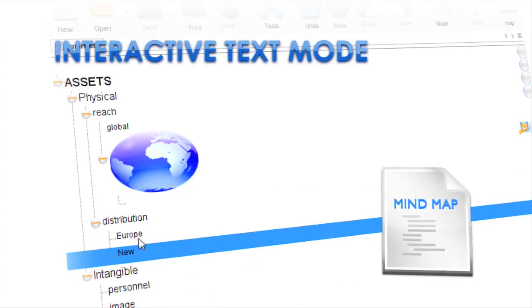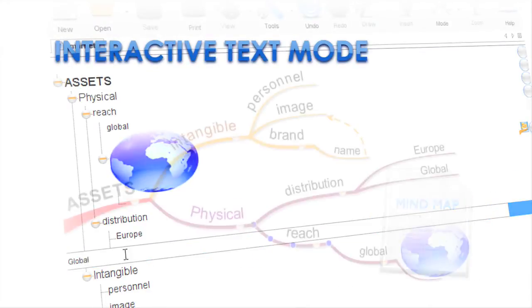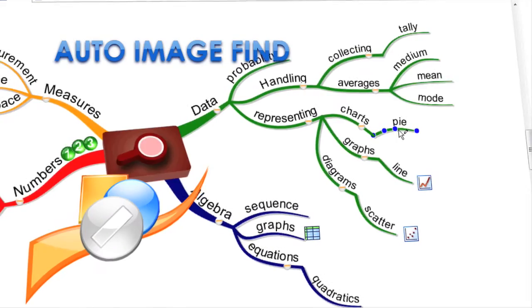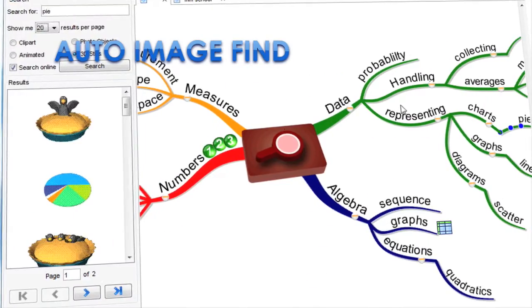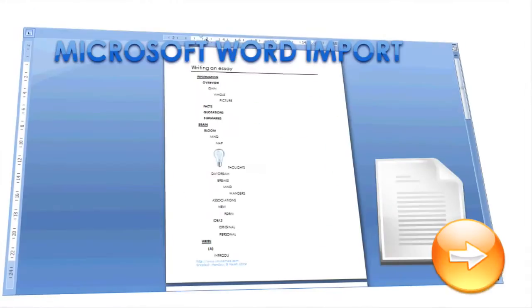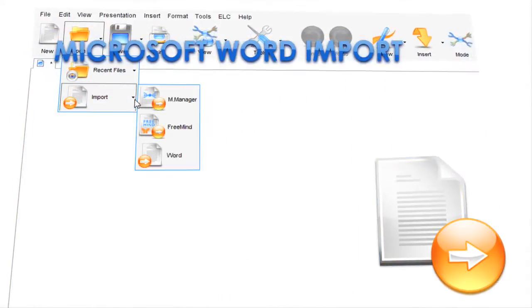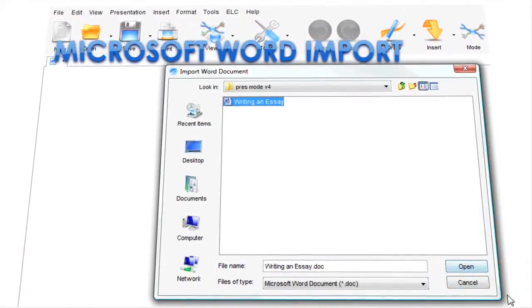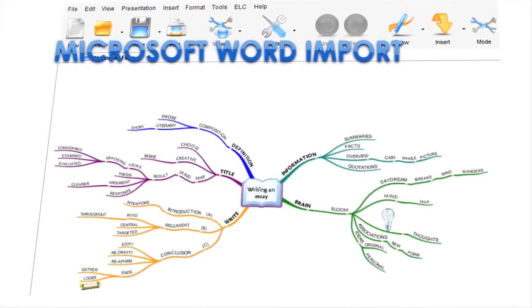Interactive text mode for content management and bi-directional editing. Auto image find so you can locate an image quickly. Microsoft Word import, turning reports and documents into a summary mindmap at a click of a button.